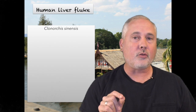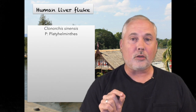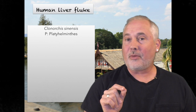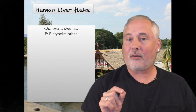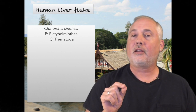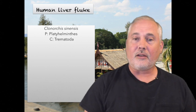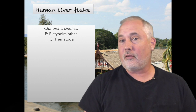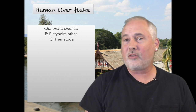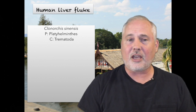The human liver fluke is an animal. It's a flatworm in the class of parasites known as Trematoda, and in the case of the liver fluke, they're found throughout Southeastern Asia.